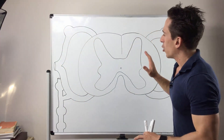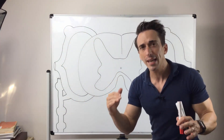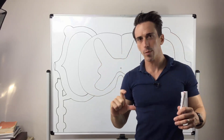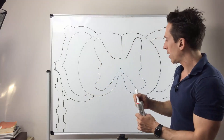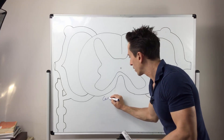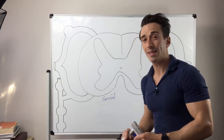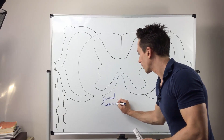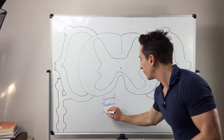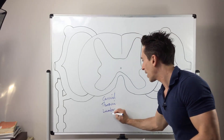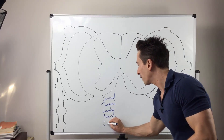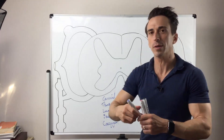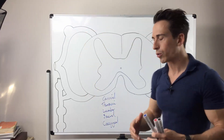First thing is, when we look at the spinal cord, it begins just underneath the brain stem. There are multiple segments of the spinal cord: we've got the cervical area — cervical means neck — we've got the thoracic, the lumbar, the sacral, and the coccygeal. These are the different segments going from top to bottom of the spinal cord.